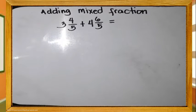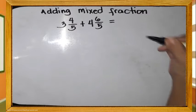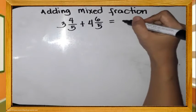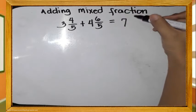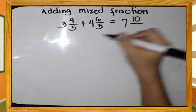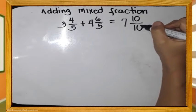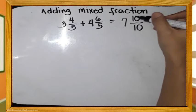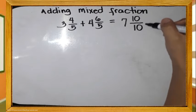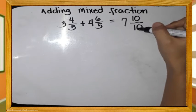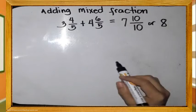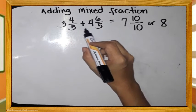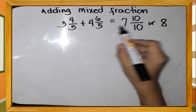Adding mixed fractions — we have 3 and 4 fifths plus 4 and 6 fifths. Add the whole numbers: 3 plus 4 equals 7. Add the numerators: 4 plus 6 equals 10. Copy the denominator, 5. Simplify — since the numerator and denominator of 10 fifths are equivalent to a whole number, that equals 2. So 2 plus 7 equals 9. Thus, 3 and 4 fifths plus 4 and 6 fifths equals 9.